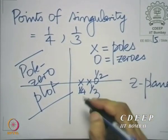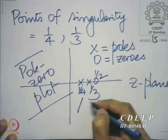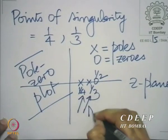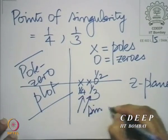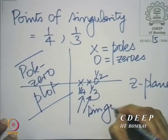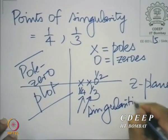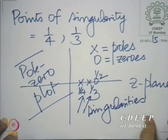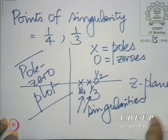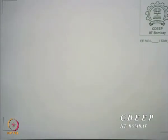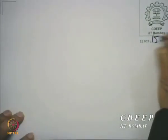These poles give you the singularities, and therefore the regions of convergence must exclude these singularities. What possible regions of convergence can we have?